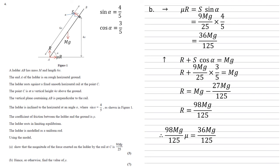Both sides have got MG on the numerator, both sides have got 125 on the denominator so they all cancel out. We get 98mu equals 36, hence mu equals 18 over 49.